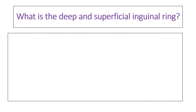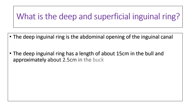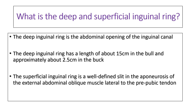The inguinal canal has two openings referred to as the inguinal rings: a deep opening and a superficial opening. The deep inguinal ring is the abdominal opening of the inguinal canal and has a length of about 15 centimeters in the bull and approximately 2.5 centimeters in the male goat or buck. The superficial inguinal ring is a well-defined slit in the aponeurosis of the external abdominal oblique muscle, lateral to the prepubic tendon, and is the opening that leads into the scrotal sac in the male animal.